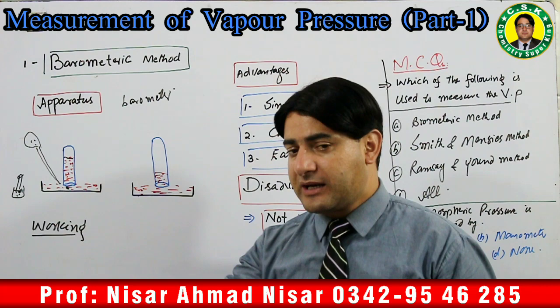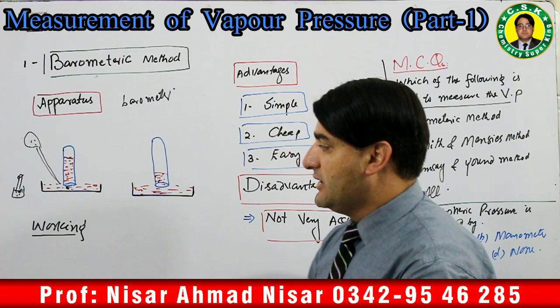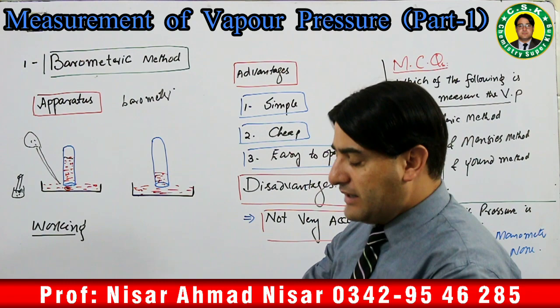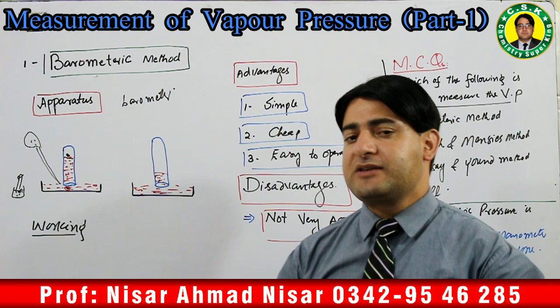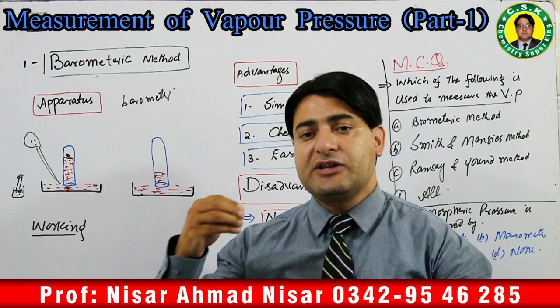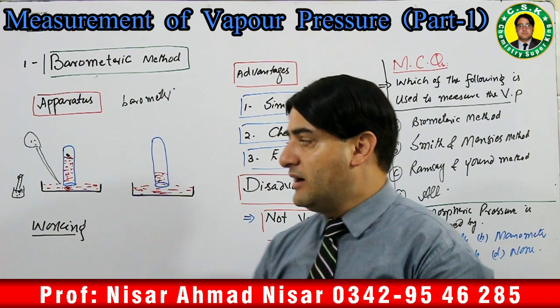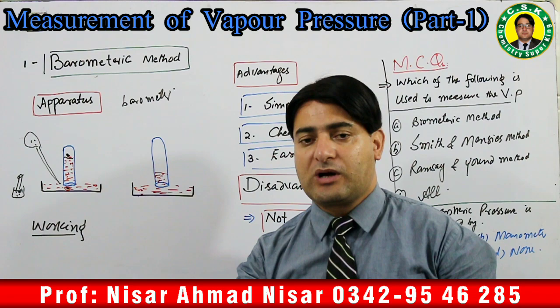Jab yeh liquid jis ka vapor pressure maloom karna ho us ko mercury wali inverted tube ke neechay daalenge to kya hoga — yeh jo drop hai yeh rise kar ke mercury ke top par chala jaayega. Kyun? Chunke tamam liquids mein se sabse zyada density mercury ki hoti hai, is liye jis liquid ko bhi daalenge woh mercury ke surface ke top par chala jaayega.